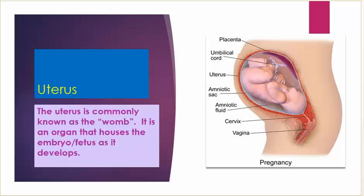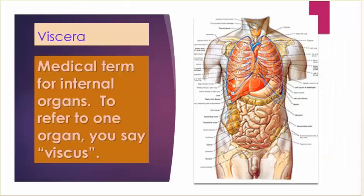Uterus: the uterus is commonly known as the womb; it is an organ that houses the embryo and fetus as it develops. Viscera: the medical term for internal organs. To refer to one organ, you say viscus.